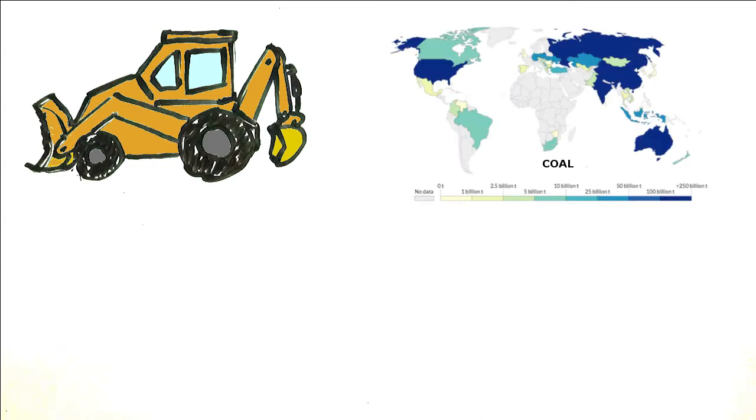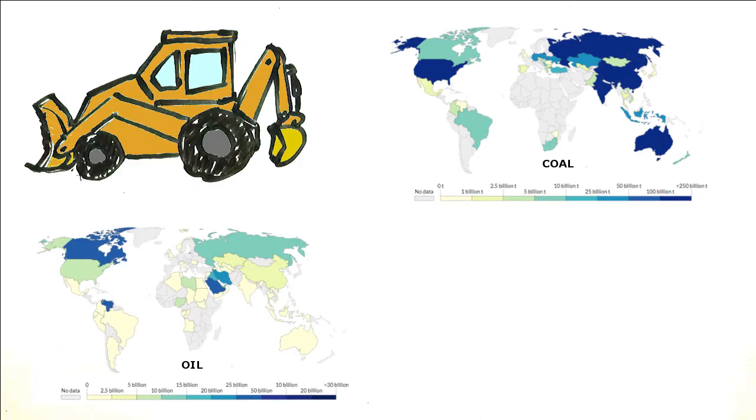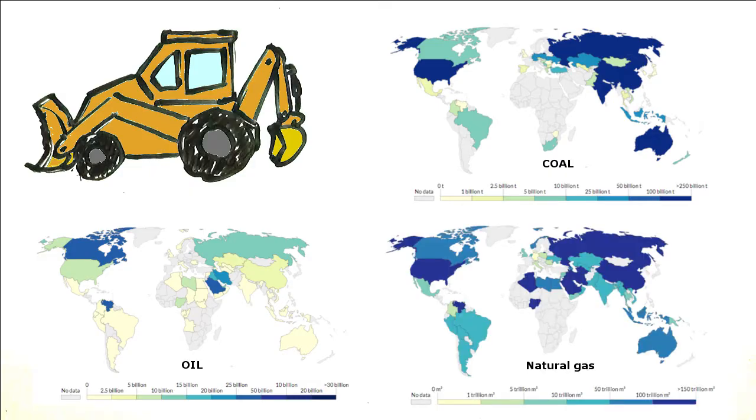The largest deposits of coal happen to be in East Asia, Australia, and the United States. Oil is most plentiful in North America, Northern Asia, and the Middle East, and natural gas reserves are spread more throughout the world with high concentrations in the Middle East, East Asia, and North America.